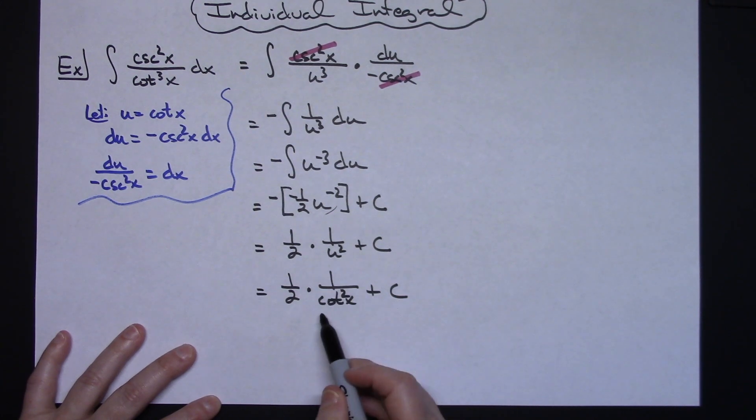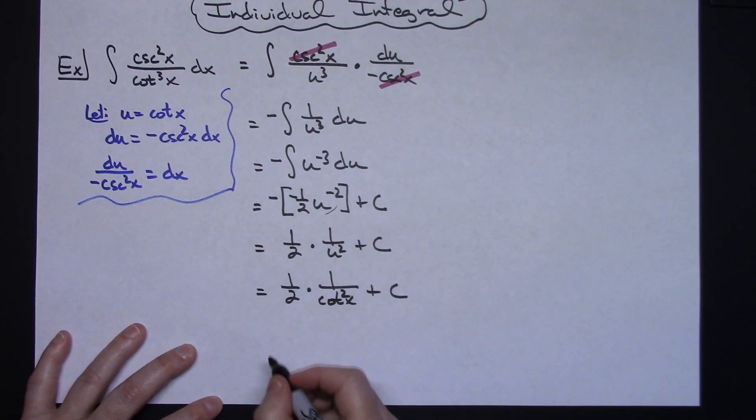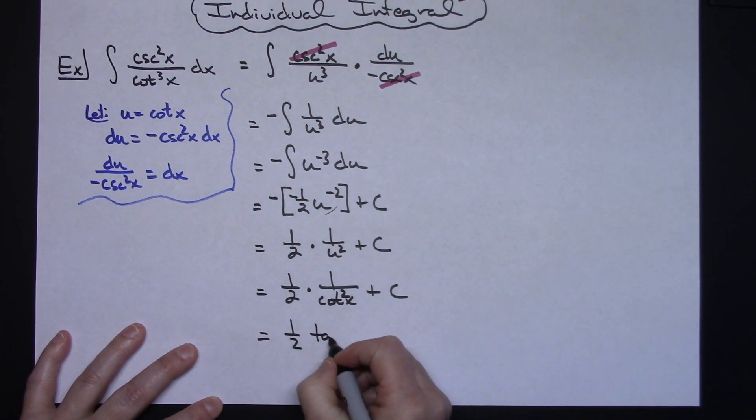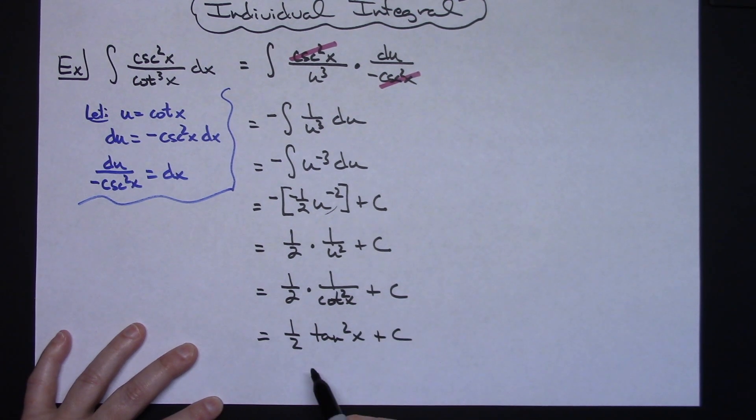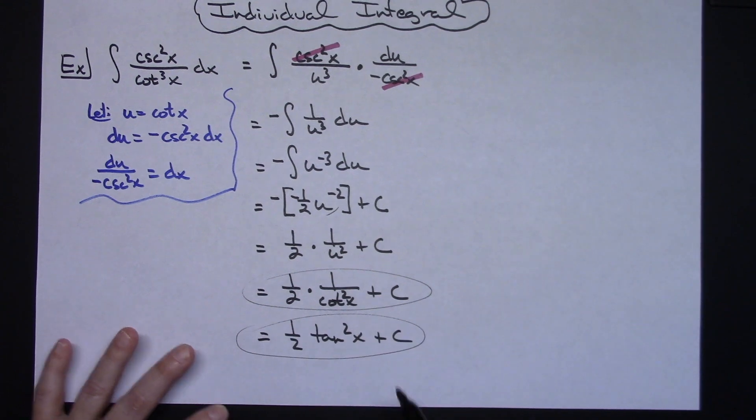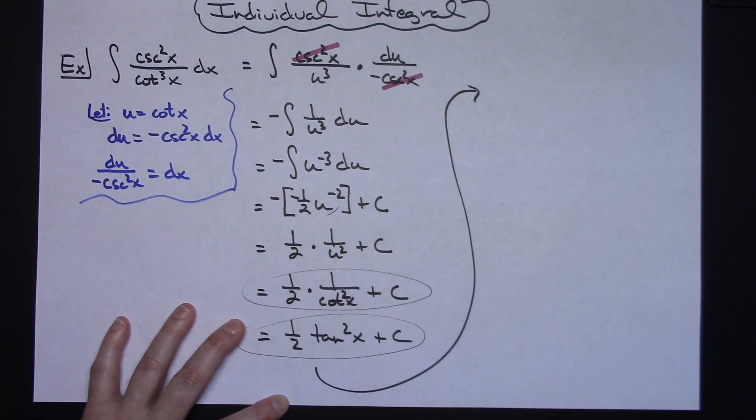Hopefully you recognize 1 over cotangent squared x. That's a pretty easy reciprocal identity. That's going to be a tangent squared. So depending on your particular instructor they might want you to go a little bit farther and say 1 half tangent squared x plus c. If you do an integral calculator online that first answer they give you is that. But that's a pretty easy substitution right there. Now let's go up and keep looking, you know how many substitutions do you have to go.